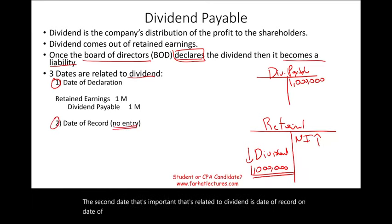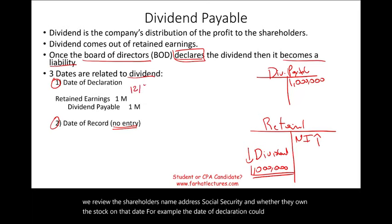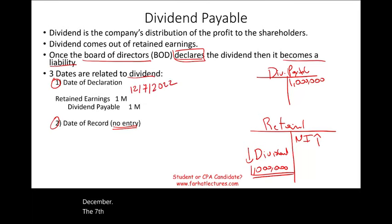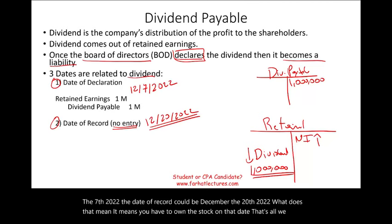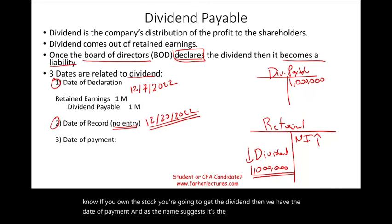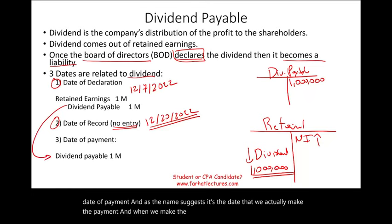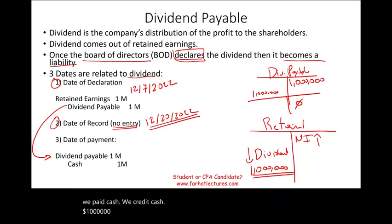On the date of record, we make no journal entry. We simply review shareholder names, addresses, social security numbers, and whether they own the stock on that date. For example, the date of declaration could be December 7, 2022, and the date of record could be December 20, 2022 — you must own the stock on that date to receive the dividend. The third date is the date of payment. When we make the payment, we debit dividend payable $1 million and credit cash $1 million, reducing the liability to zero.